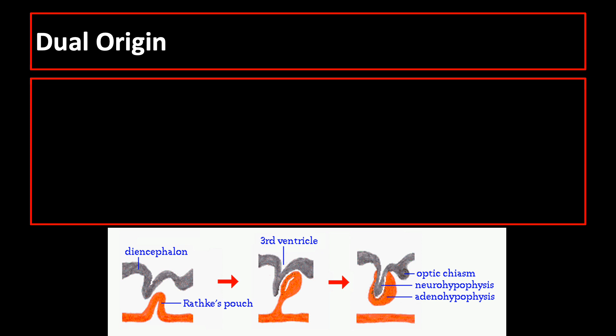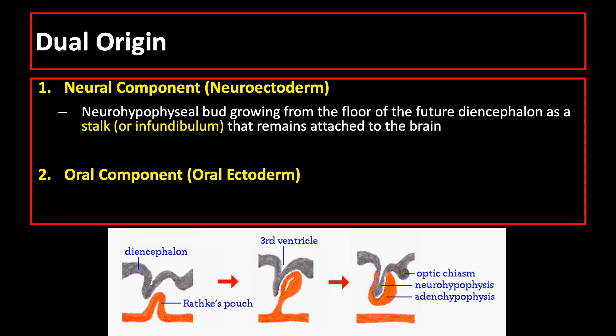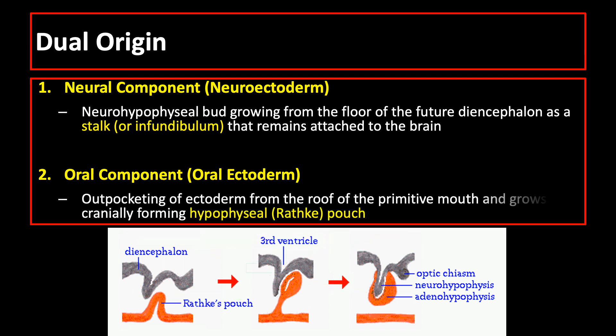The pituitary gland has dual origin — a neural component and an oral component. The neural component is the neurohypophysial bud growing down from the floor of the future diencephalon as a stalk or infundibulum that remains attached to the brain. The oral component arises as an outpocketing of ectoderm from the roof of the primitive mouth and grows cranially, forming a structure called the hypophysial pouch or Rathke's pouch.